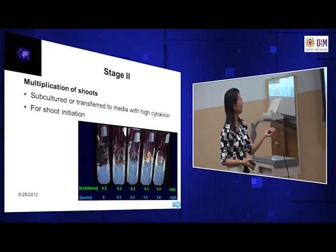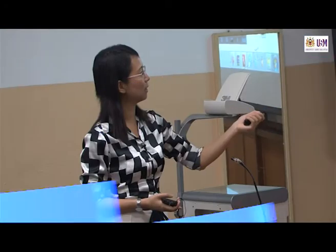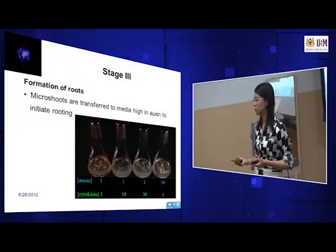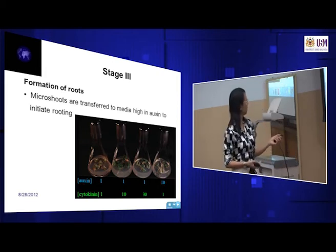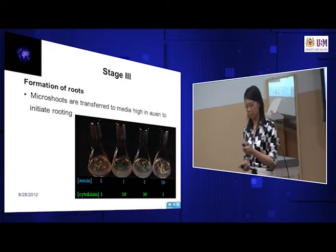When the concentration of cytokinin is 0.3 mg/L and auxin ranges from 0 upward — when cytokinin concentration is high, we see a lot of shoots. When auxin concentration is higher than cytokinin, we see a lot of roots. When concentrations are the same, then we see callus. After shoots have been formed, we transfer plant materials to a new medium containing auxin — when auxin concentration is very high, like 10 mg/L, you can see a lot of roots being formed.